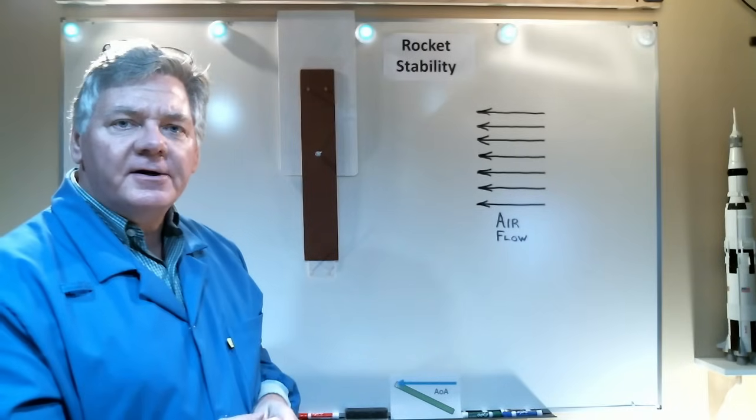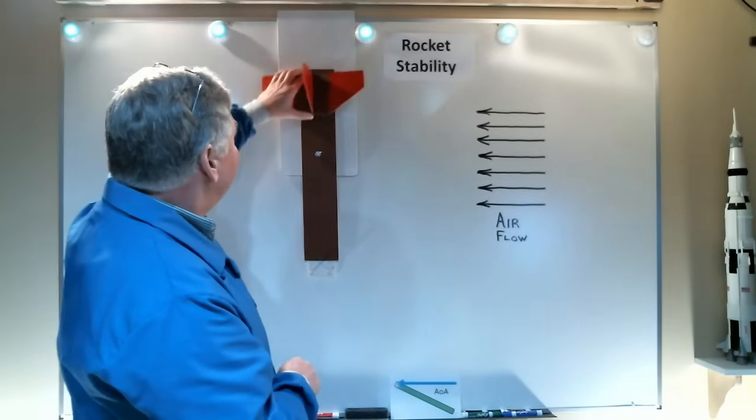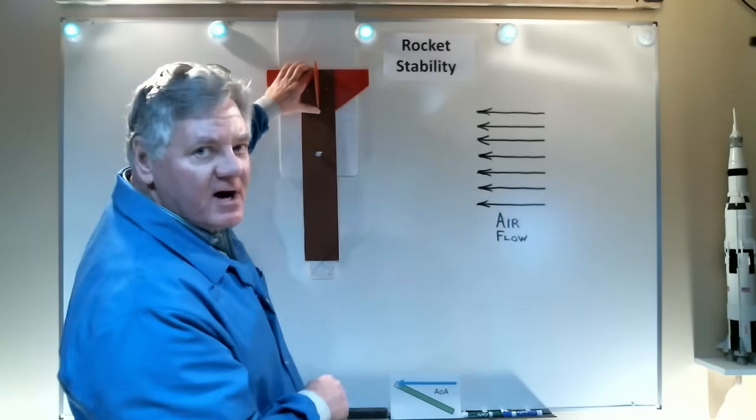So what do we do to a cylinder to try to make it more stable? Well, the first step is to add some fins. We place those fins as far as possible on the back of the rocket.